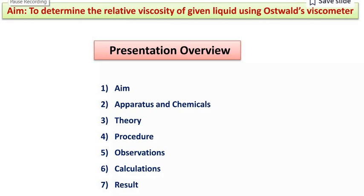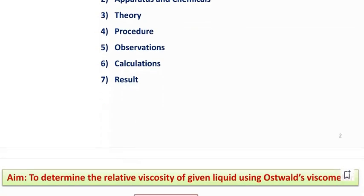The aim of this lecture is to determine the relative viscosity of given liquid using Ostwald viscometer. I will focus on the aim, show you the requirement of the apparatus and chemicals for this experiment, discuss the theory behind it, talk about the procedure, show you the observations, and discuss the results.